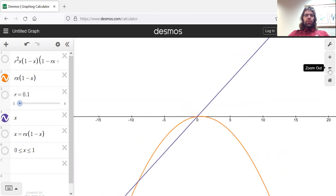Fixed points occur when this orange curve intersects this purple straight line. So we see two fixed points, one around here and one at zero.